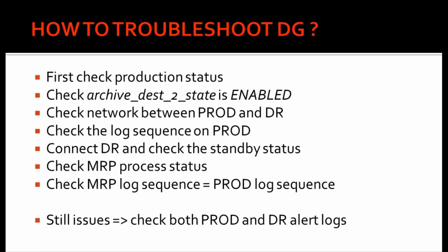Next, we need to check the MRP process status. Also check the MRP log sequence number — it should be exactly equal to the production log sequence. Whatever archive log sequence is running on your production server, your MRP log sequence should be the same. When you see both are equal, it means your Data Guard configuration is in sync.